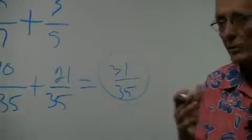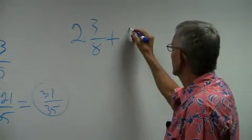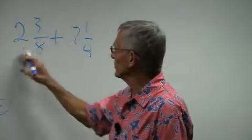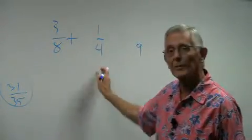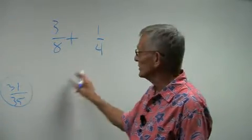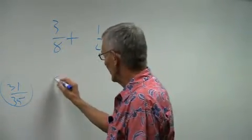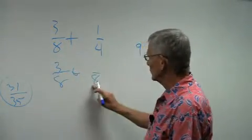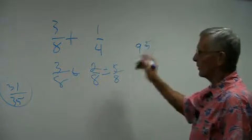When we add fractions, we have to find the lowest common denominator. Sometimes you may have mixed numbers — for example, two and three-eighths plus seven and one-fourth. One easy method is to take the two whole numbers and set them aside: two and seven gives me nine. Then just add the two fractions. Eight and four — the lowest common denominator is going to be eight, since four divides into eight evenly. Eight goes into eight once — one times three is three. Four goes into eight two times — two times one is two. Three plus two is five-eighths. Add that to nine and we have nine and five-eighths.